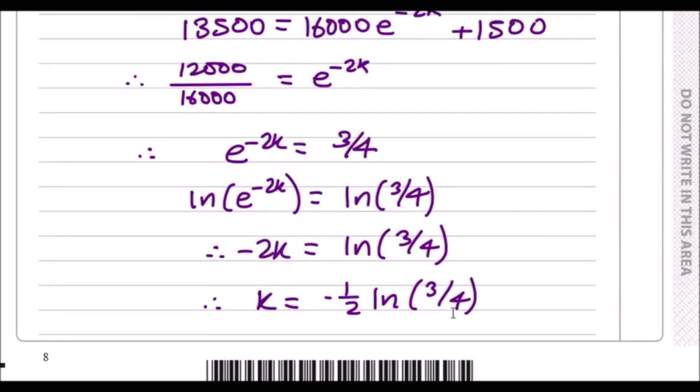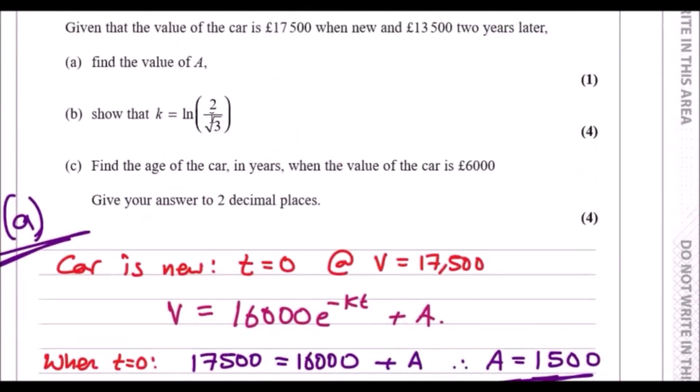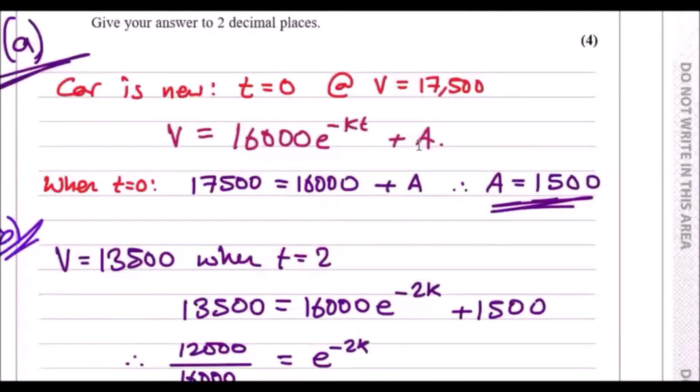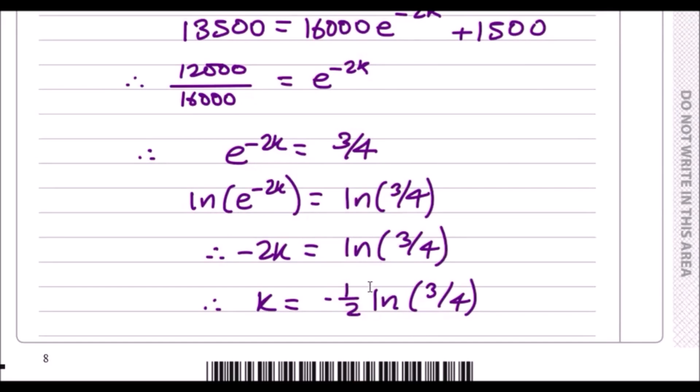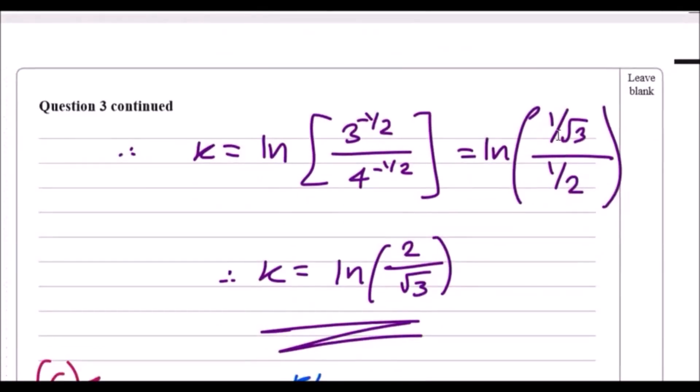You get minus a half times ln 3 quarters. Be very careful because your calculator will not give you this expression; you have to find k step by step. I used the log rules—a value in front of the log becomes a power, so 3 to the power negative half and 4 to the power negative half. Anything to the power half is square rooting, so this is square root 3. With a negative sign it's a reciprocal, so 1 over root 3. Likewise, 1 over square root 4 which is 2. Because they're both 1 overs, flip them upside down to get 2 over root 3.